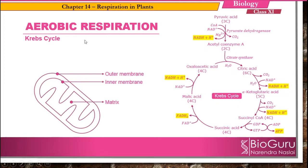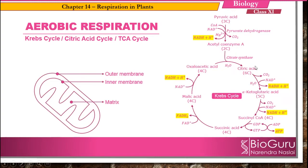The Krebs cycle is also called the citric acid cycle, because the first stable compound formed after the combination of oxaloacetic acid with acetyl coenzyme A is citric acid. The citric acid cycle is also called the TCA cycle — tricarboxylic acid cycle — because citric acid contains three carboxylic groups. So it is also referred to as the tricarboxylic acid cycle.